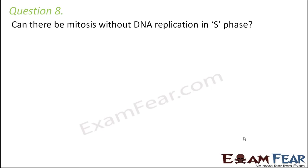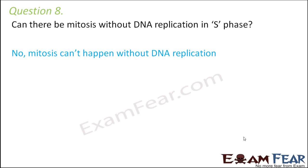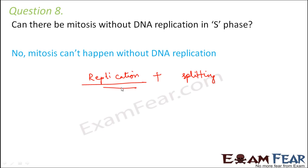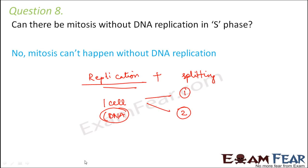Question number 8: Can there be mitosis without DNA replication in S phase? Absolutely not. The basic principle of mitosis is replication followed by splitting. If you do not replicate the DNA, you just have one copy — and when you split to form two daughter cells, you cannot divide that DNA into both. You need two copies of DNA to distribute to both daughter cells. So DNA replication is a must for mitosis to take place.